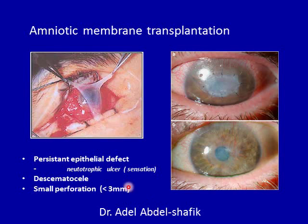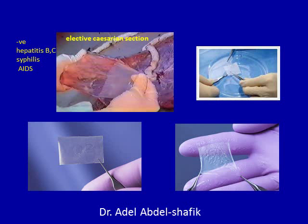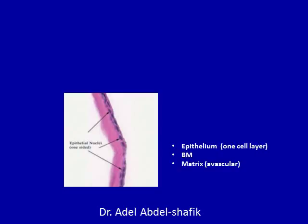Amniotic membrane transplantation is important to treat conditions like neuroparalytic ulcers. It can also be used in conditions like descemetocele or small perforation of the cornea less than three millimeters. The amniotic membrane is sutured to the site or over the whole cornea, and it is obtained from elective caesarean section. The mother should be negative for hepatitis, syphilis, and AIDS. The amniotic membrane is prepared and kept in fluid until ready to be sutured.